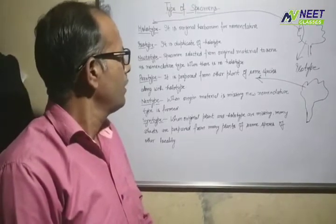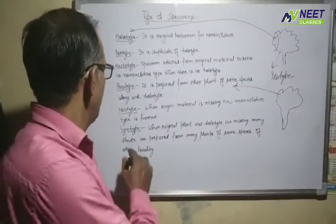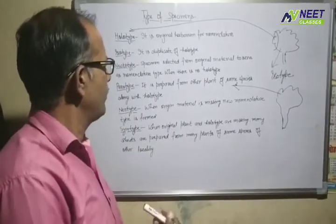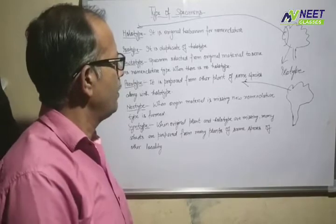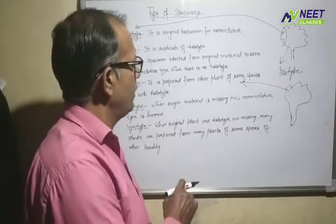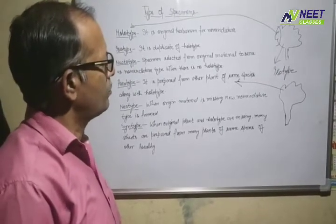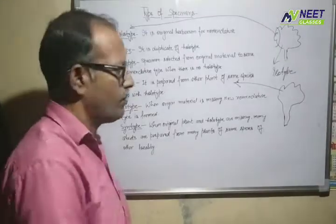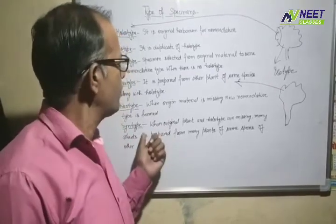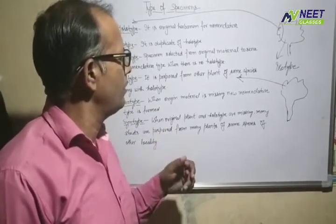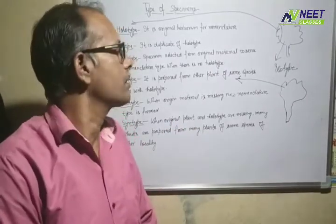In this case, different plants of more than one species — where the original plant and Holotype are used — the seeds from different plants of the same species are considered the same plant, even if one plant is not exactly the same as another but belongs to the same species.